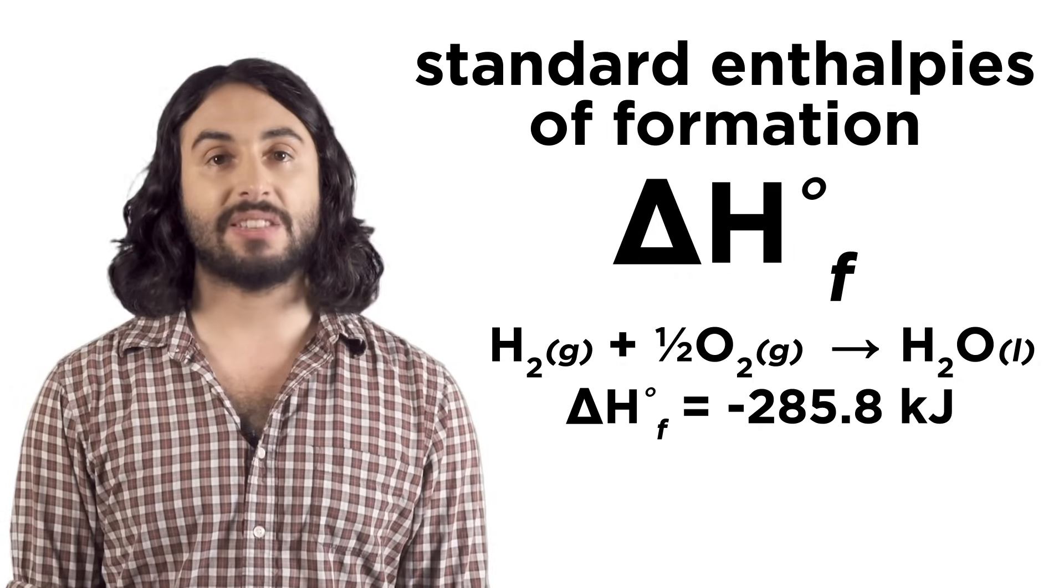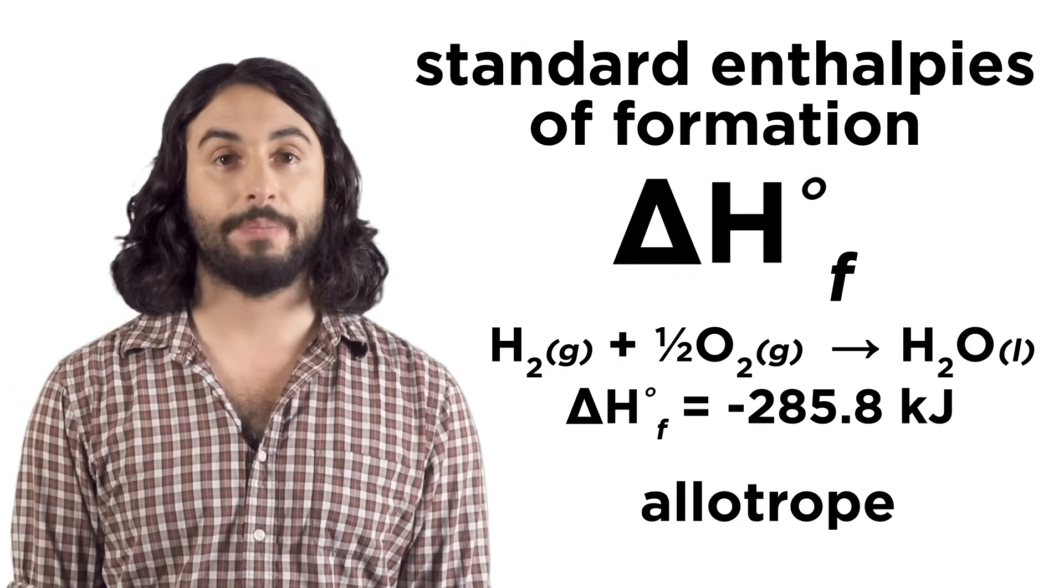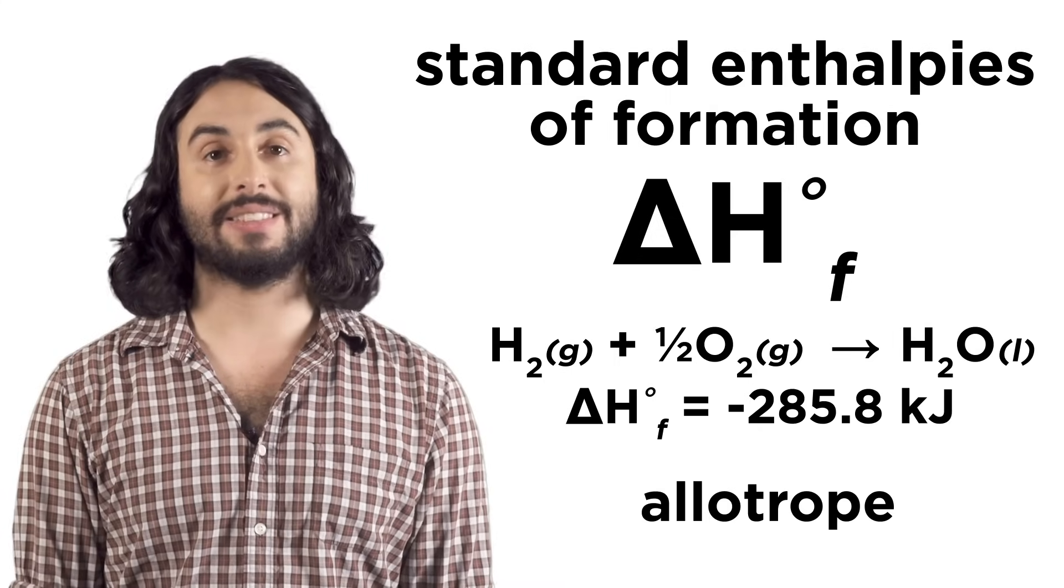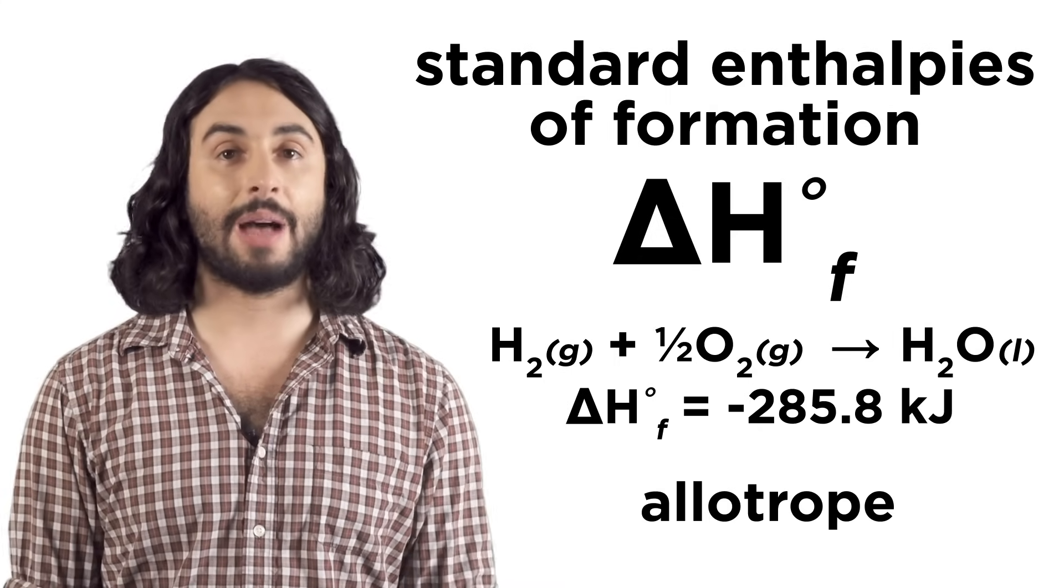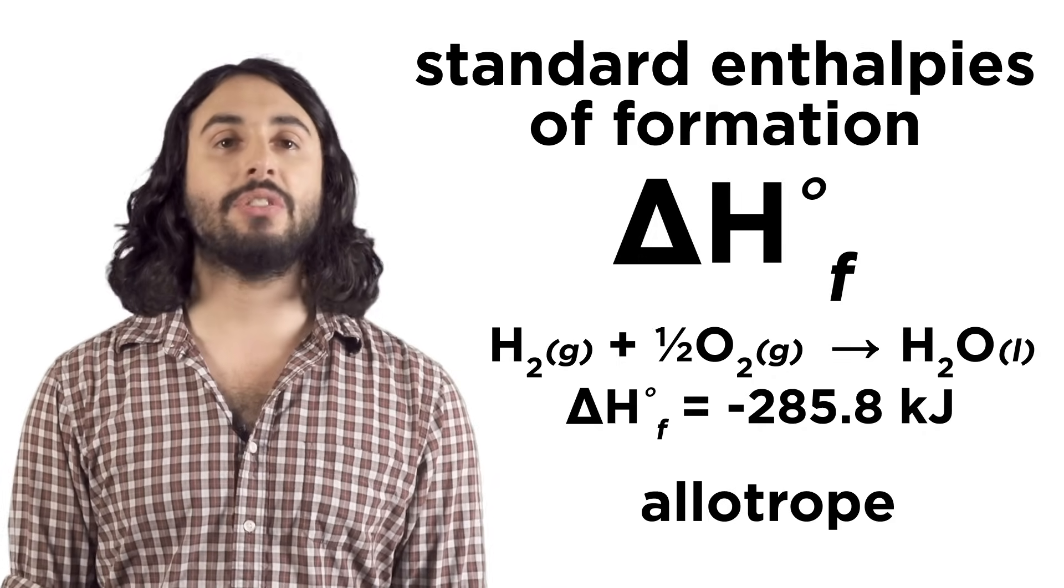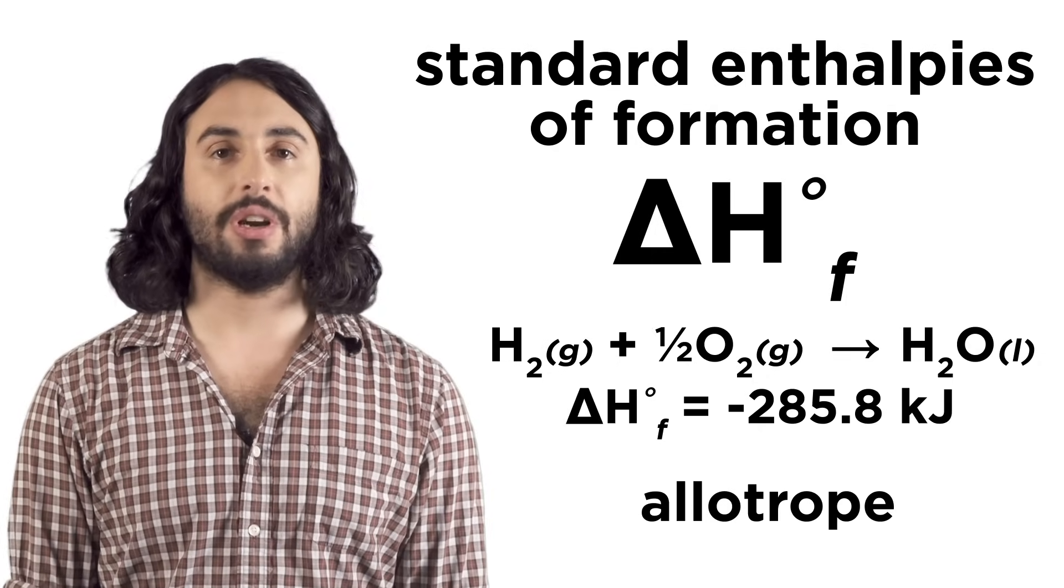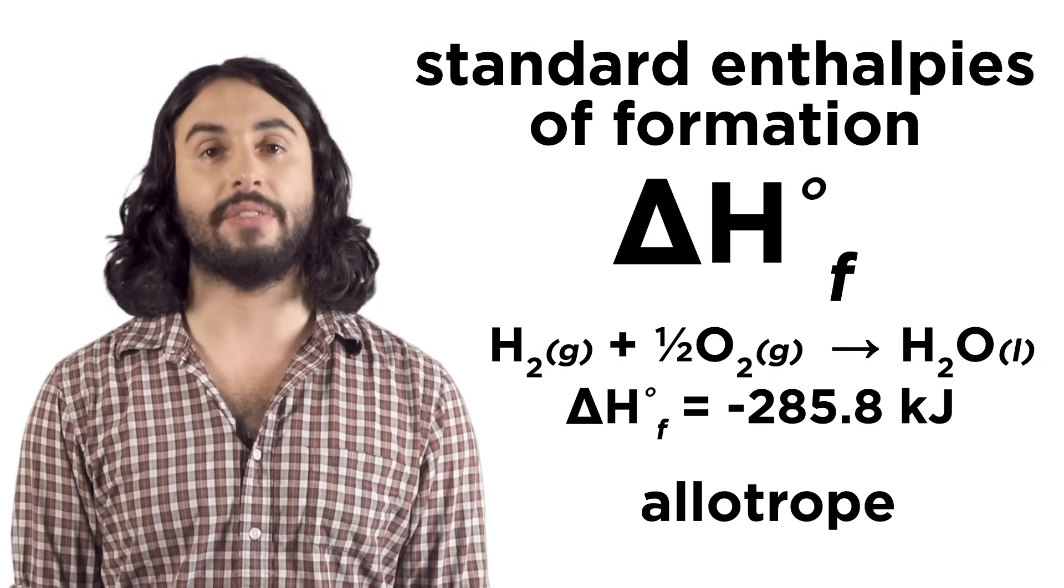Most stable state means the most common allotrope or physical form of an element, so carbon graphite instead of diamond, diatomic oxygen instead of ozone, and so forth. Standard state just refers to standard temperature and pressure, which is room temperature and atmospheric pressure at sea level. That's what is meant by the degree symbol.